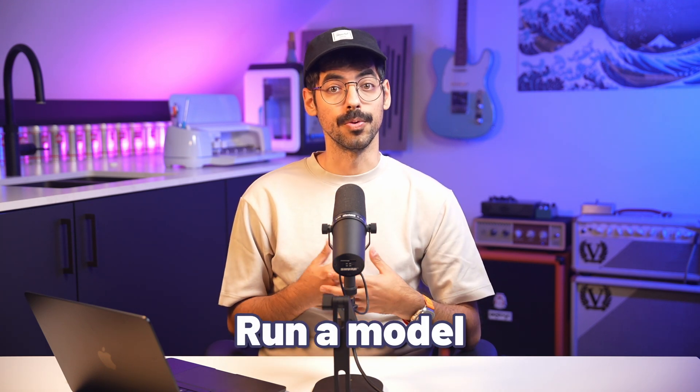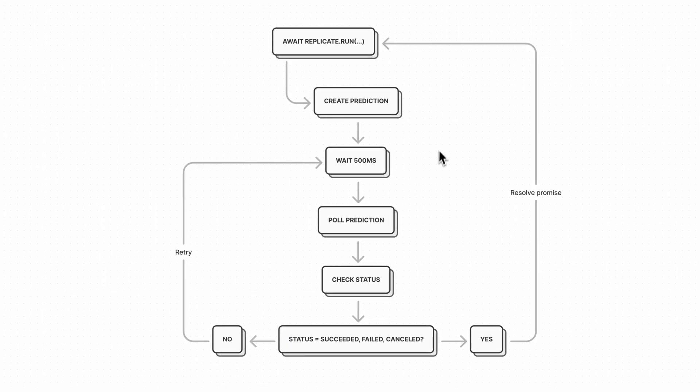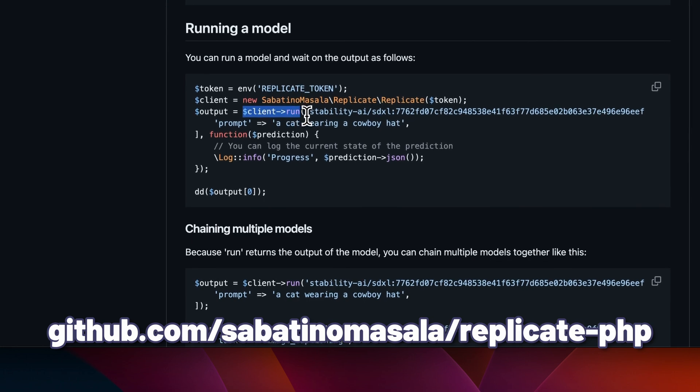Replicate provides a couple of first-party client libraries, for example in Node.js. These libraries allow you to run a model and wait for its output using promises. Behind the scenes, this creates a prediction and polls the API every 500 milliseconds. When the status changes to failed, succeeded, or canceled, the promise will resolve. There were a couple of PHP clients available on GitHub, but they were all missing this — in my opinion — crucial feature. So I created my own PHP Replicate client with this run functionality, and I open-sourced it for you to use in your projects.